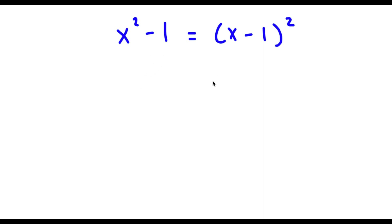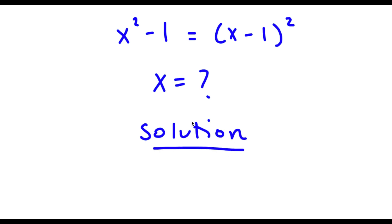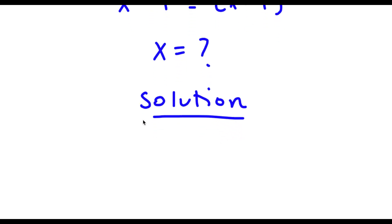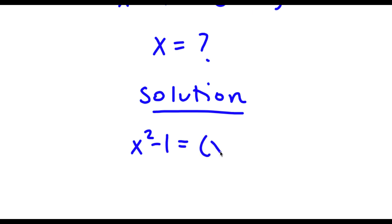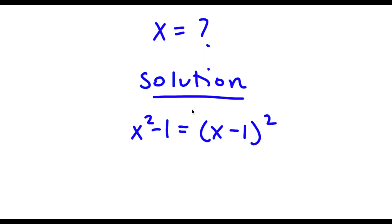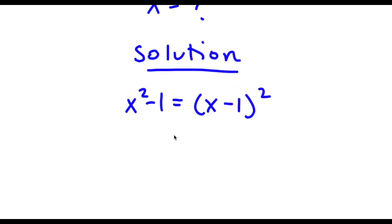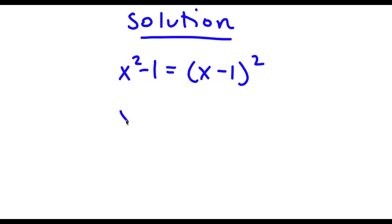I have x squared minus 1 is equal to x minus 1 squared, and I want to find the value of x. For my solution, I start with x squared minus 1 equals x minus 1 squared. Now, x squared minus 1 is the same thing as x squared minus 1 squared, because 1 is the same thing as 1 squared. So now I have x squared minus 1 squared is equal to x minus 1 squared.